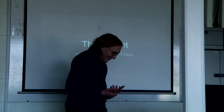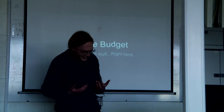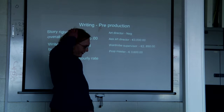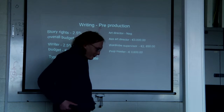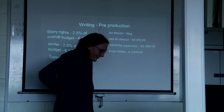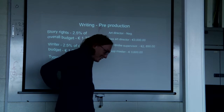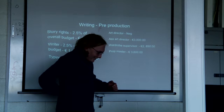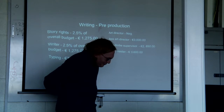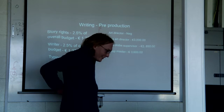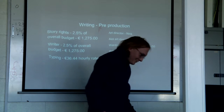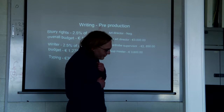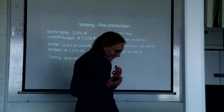Budget and pre-production: Story rights — I found an article stating that 2.5% of the overall budget should go to story rights, which is €1,275. The writer should also get 2.5% of the overall budget, another €1,275. Typing comes in at €36.44 hourly rate — about an hour for this script, so that's fine. The art director is negotiable. Assistant art director is €3,000. Wardrobe supervisor is €2,850.